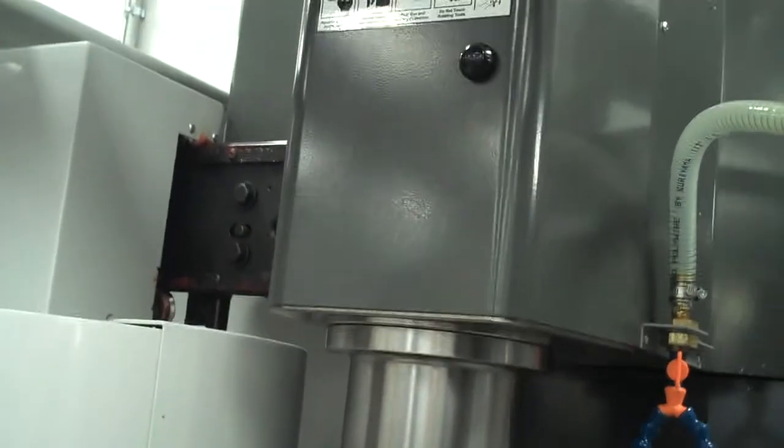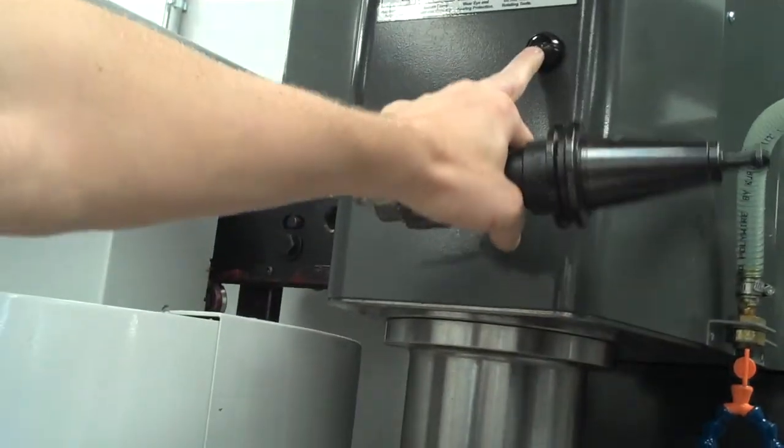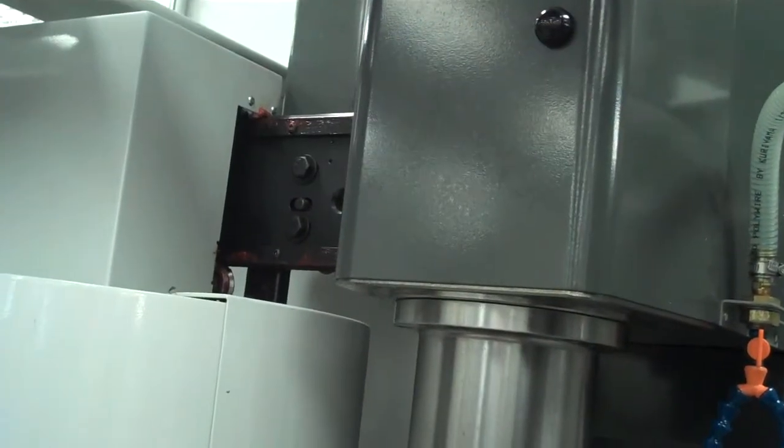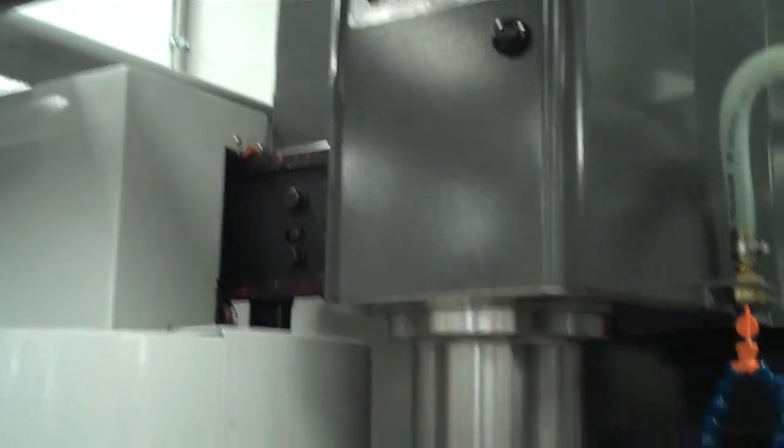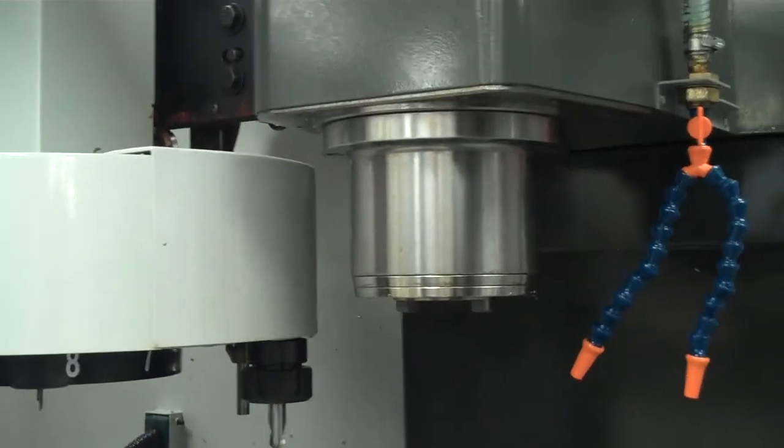Now this specific mill also has the tool release button right up top here, and so I can actually press this black button right here as well. It does the same thing. However, I wanted to show you the button on the control because our other two mills do not have that button right there.